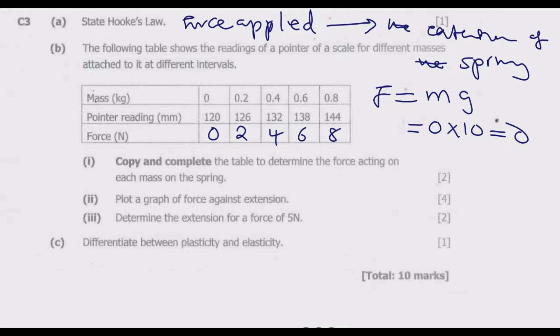Roman numeral 2: plot a graph of force against extension. Force we know is moving from basically 0 to 8, in intervals of 2 newtons. Then our extension. We've been given the pointer reading in millimeter. We know that before we put any mass it's starting from 120, so 120 is basically the zero or the starting point.